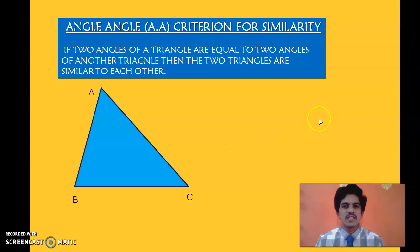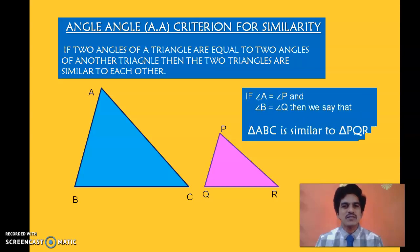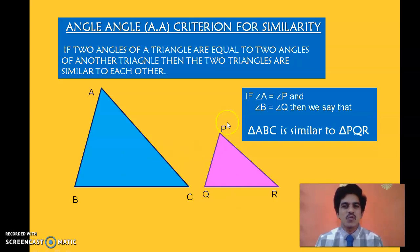I will recollect this by taking two triangles, triangle ABC and triangle PQR. If any two angles of triangle ABC are equal to any two angles of triangle PQR, then these two triangles will be similar to each other. For example, if angle A equals angle P and angle B equals angle Q, then automatically these two triangles will be similar. You might wonder why I am not talking about the third angle — because the sum of three angles in a triangle is always 180 degrees, so the third angles will automatically be equal.